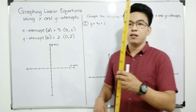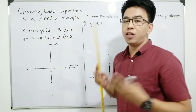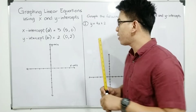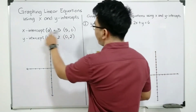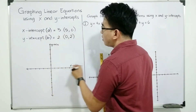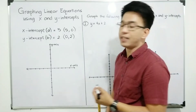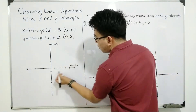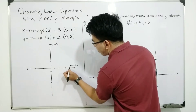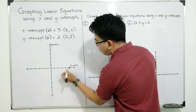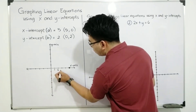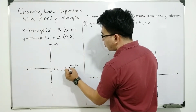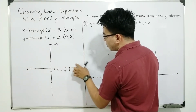So I have here a meter stick. In your case, you can use your ruler and graphing paper. For the x-intercept, it is located along the x-axis, and this is (5, 0). So we have here this location, because this is 1, 2, 3, 4, 5. This is the location of your x-intercept.